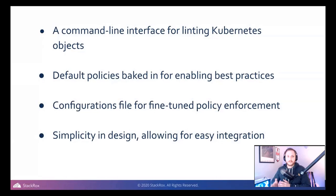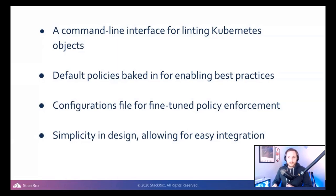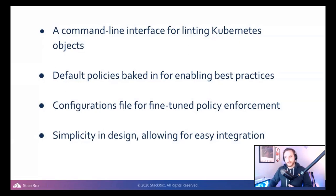We use the default policies baked into the CLI to let you know if there's a configuration mismatch or if you have elevated privileges, and things of that sort. Because we have all these policies, we can configure, enable, and disable certain policies, allowing for fine-tuned policy enforcement. And because it's a CLI — Go-based — we have simplicity in design. It's easy to integrate; it's a binary, just download it, install it, add it to your CI pipeline.